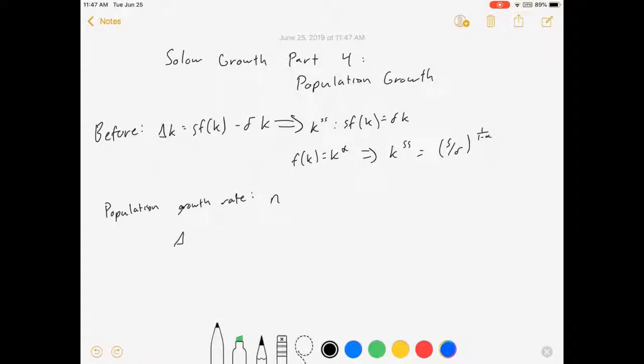So our evolution of capital per worker is this. Change in capital per worker equals savings or investment, S F of K, minus, we still have depreciation, but we also have how fast our population is growing times the capital per worker. So if our population grows faster, that capital gets spread out more, so this thing can be rewritten as S F of K minus delta plus N times K.